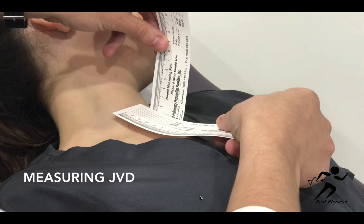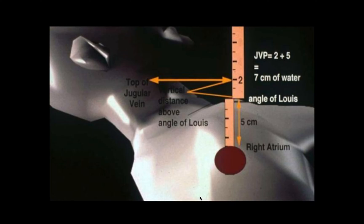In order to measure the jugular venous pressure, we have to estimate the vertical distance from the sternal angle to the top of the column of pulsation. We put the patient at 45 degrees with the neck rested and the face slightly turned to the left. We observe the pulsation between the two heads of the sternocleidomastoid and identify the highest point of pulsation up to the angle of the mandible.